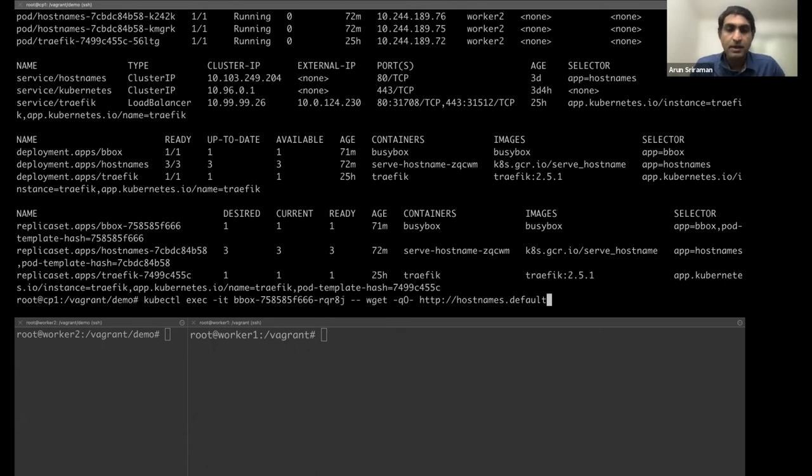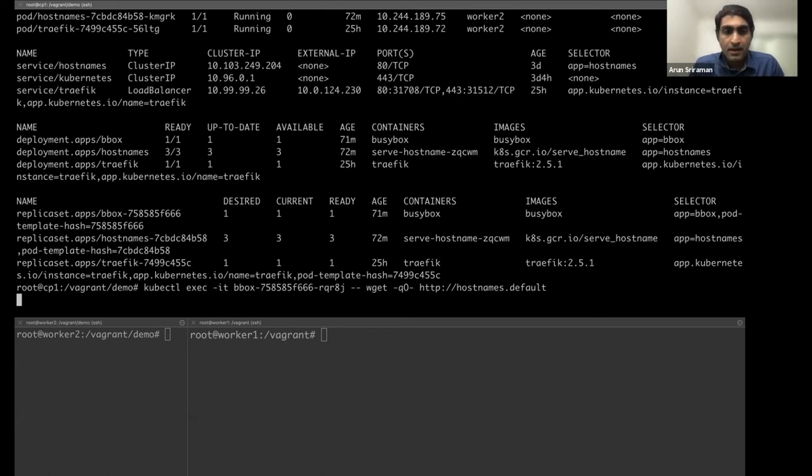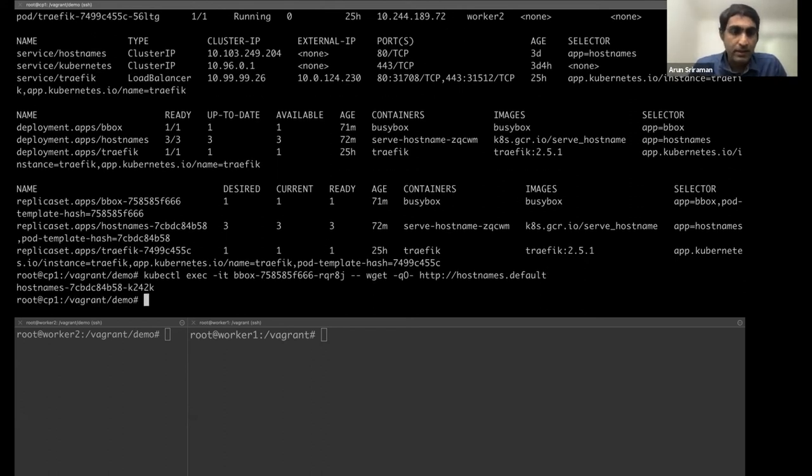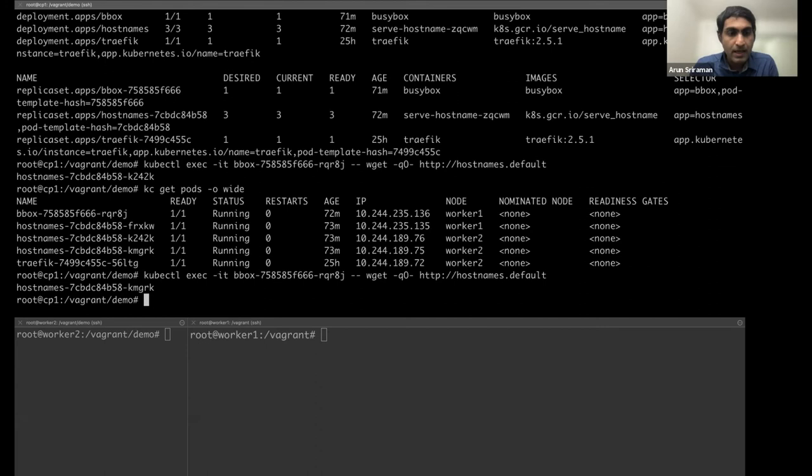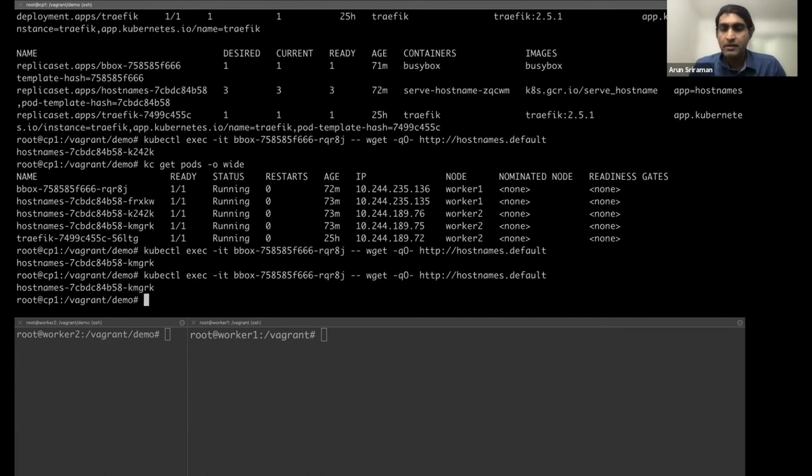And the first case we'll see is where the communication stops working due to maybe say a network policy. So let's see if things are working fine now. So what I'm going to do is I'm just going to run a wget on the DNS entry for my hostname from my busybox, which is app A to app B. And if you look at it, it works and it gives you k242k, which is one of the pods running that.